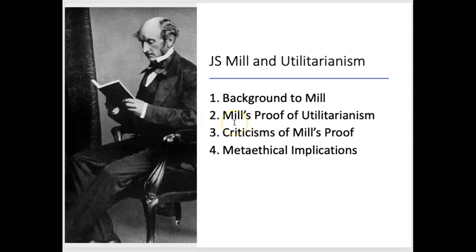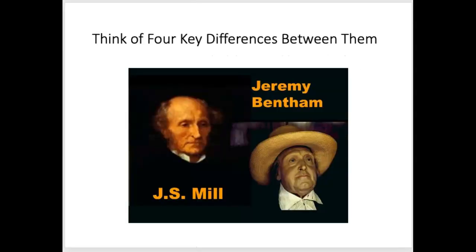I'm going to be looking at Mill's proof of utilitarianism, which is very interesting. As we do that, we will cover a number of criticisms of Mill's proof, most notably from G.E. Moore. And then we'll end by looking at some of the meta-ethical implications of Mill's proof. To start off, think about the differences between J.S. Mill and Bentham — I won't be covering those, but that's something you need to know for your examination.